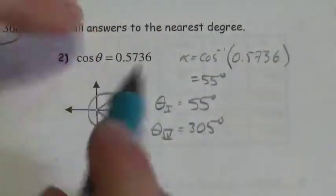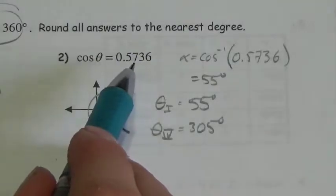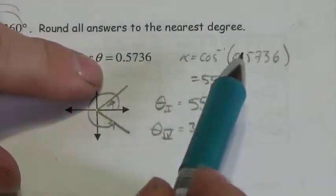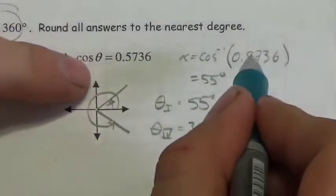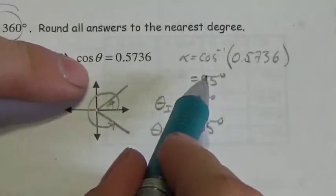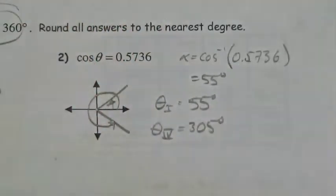So we identify what quadrants we're in first, based on the sign of the ratio. Then we use that ratio value to get the reference angle. And we put the reference angle inside the two quadrants.